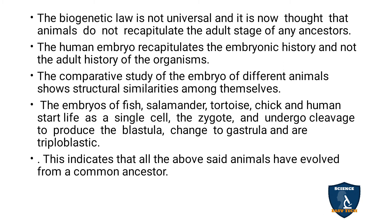The comparative study of embryos of different animals shows structural similarities among themselves. The embryo of fish, salamander, tortoise, chick, and human all start life as a single cell — the zygote — and undergo cleavage to produce a blastula, then change to a gastrula stage, forming triploblastic layers.